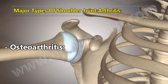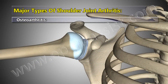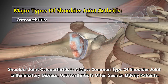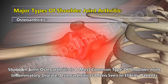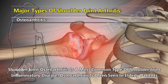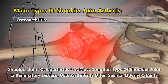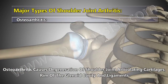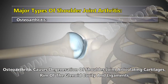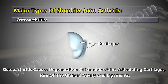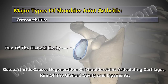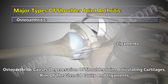Osteoarthritis is the most common type of shoulder joint inflammatory disease, often seen in elderly patients. Osteoarthritis causes degeneration of shoulder joint articulating cartilages, rim of the glenoid cavity, and ligaments.